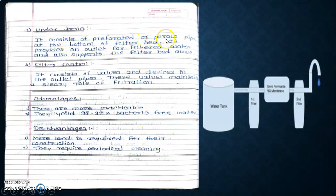Under drain consists of perforated or porous pipes at the bottom of filter bed. It provides an outlet for filtered water and also supports the filter bed above. Filter control consists of walls and devices in outlet pipes. These walls maintain the steady rate of filtration.